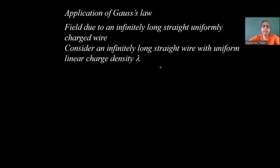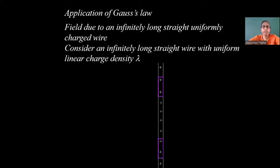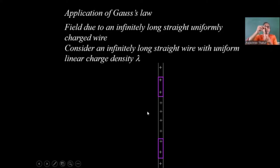Consider an infinitely long straight wire with uniform linear charge density lambda, and all over the wire there is charge. Let us take the charge as positive. Now, I am considering two length elements — charged elements — say 1 and 2. If this is the wire, I am considering a plane perpendicular to the length of the wire.